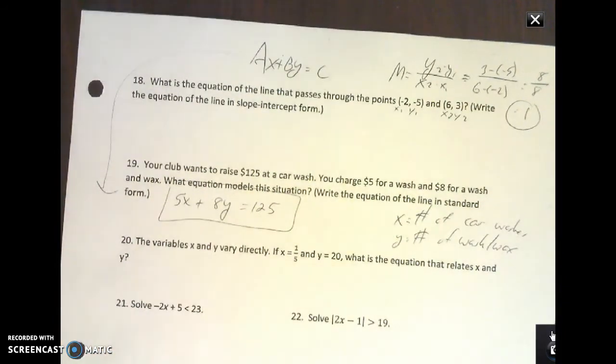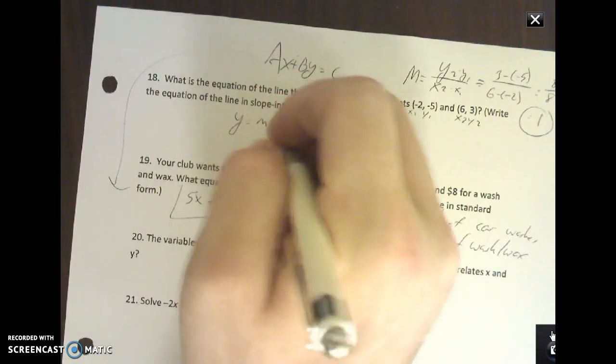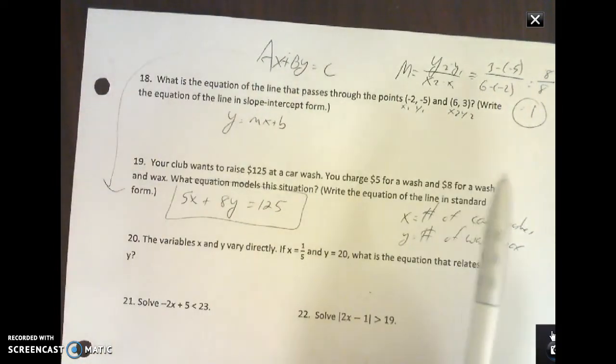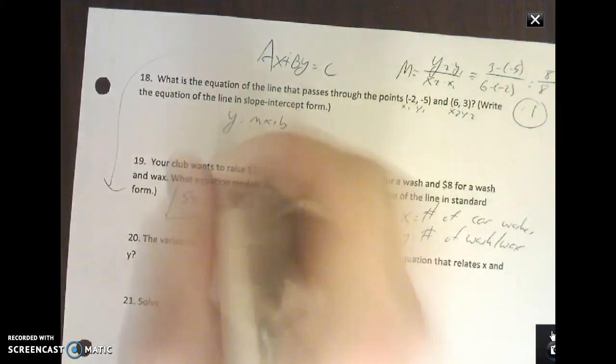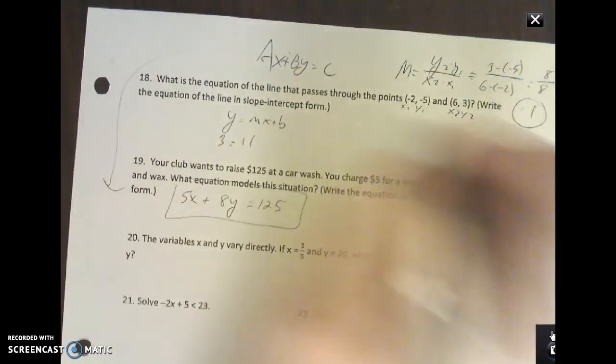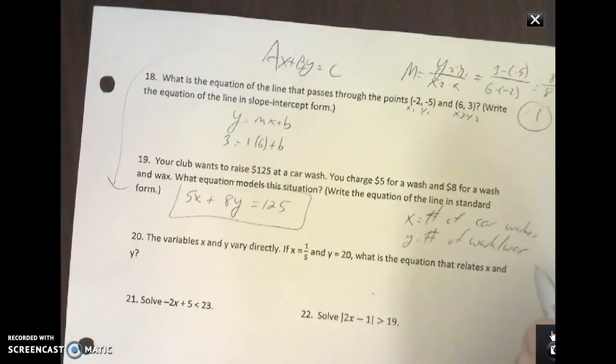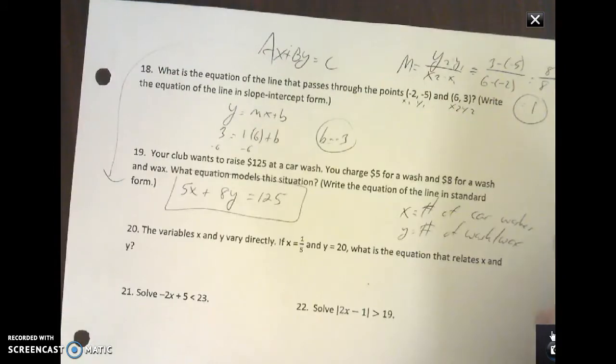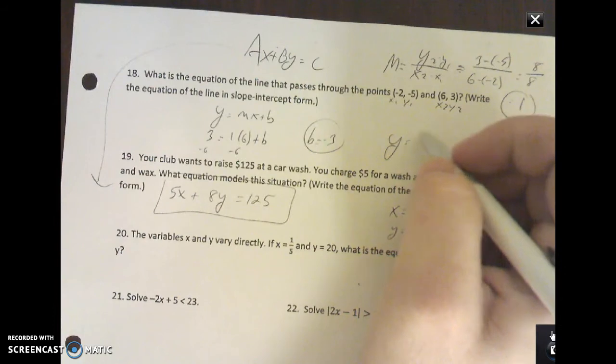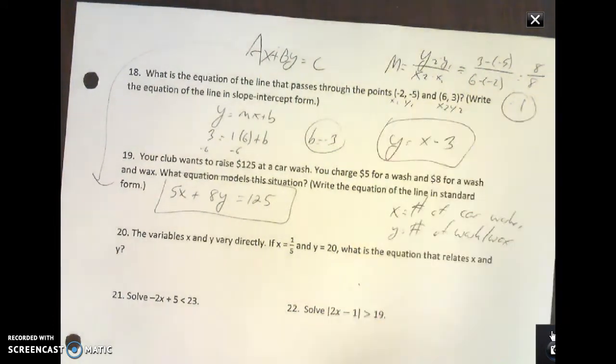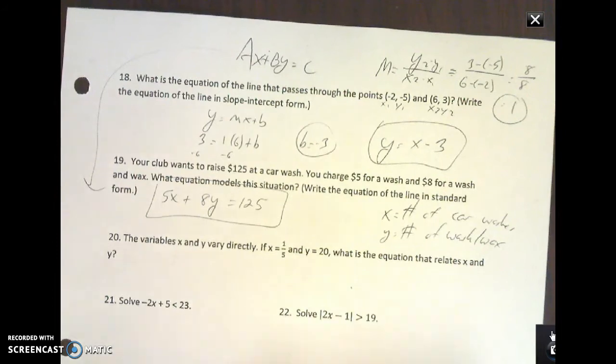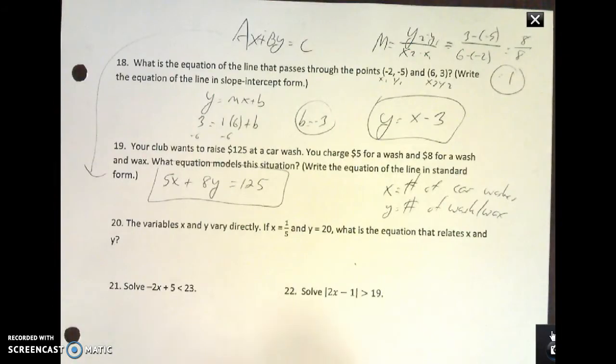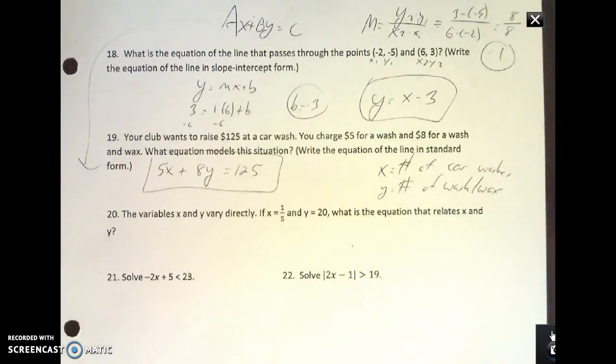That's my slope. Now if I come back over here, y equals mx plus b. I now have my m, but I need my x and y. You pick whatever you want. I'm going to go with this one. So 3 equals 1 times 6 plus b. One times six is six. If I subtract that over, b equals negative three. Now I have my m and I have my b. I can put everything back in: y equals 1x minus 3. If all else fails, it's a multiple choice test. You can just do the plug-and-chug method where you take all your answers, plug these points into it, make sure it works to beat the test.